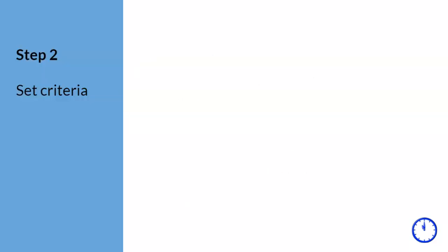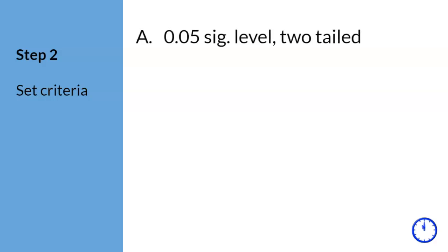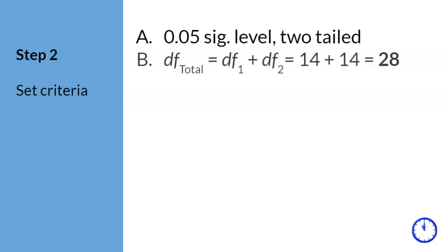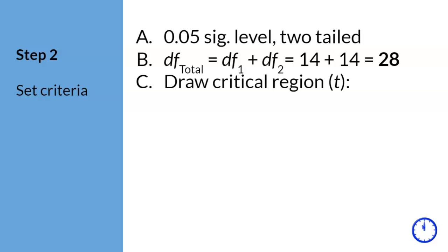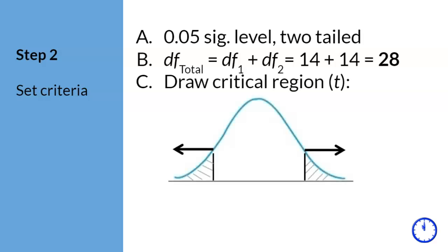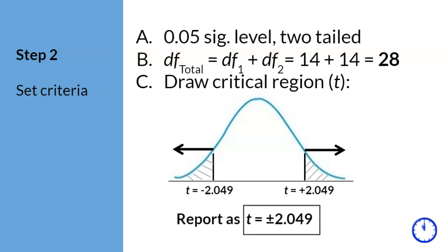Step two. We set the significance level at 0.05. The degrees of freedom total is calculated and equals 28. Since we do not know if CBT will increase or decrease depression, we draw critical regions in both tails. The corresponding t-scores for a 0.05 significance level, two tails, with df = 28, is t equals plus or minus 2.049.